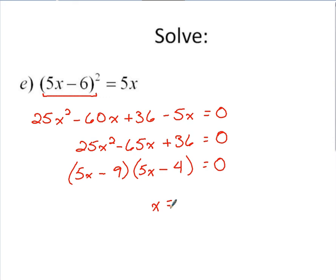Brought to us by this first factor would be the solution of 9 fifths, right? Because you'd be adding 9 over, dividing by 5. If 5x minus 9 equals zero. Brought to us by this second factor, if 5x minus 4 equals zero, we'd add 4 over, we'd divide by 5, we'd get 4 fifths back. There's our two solutions.